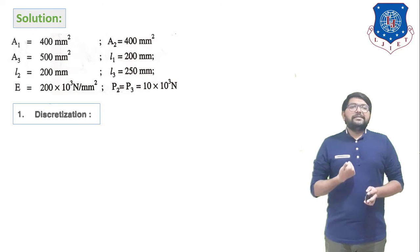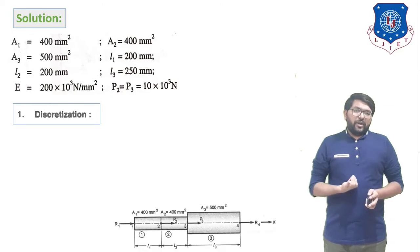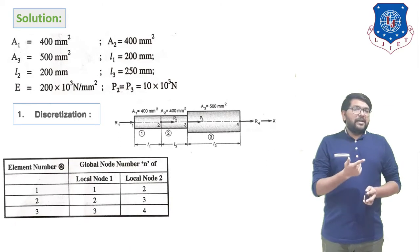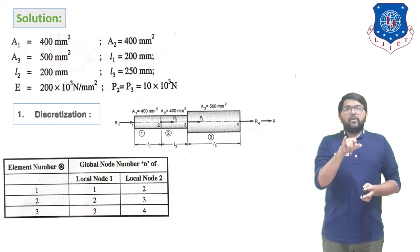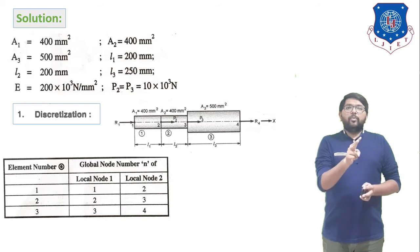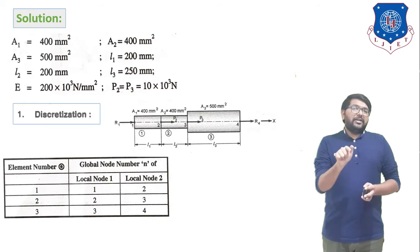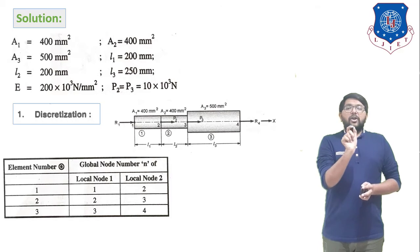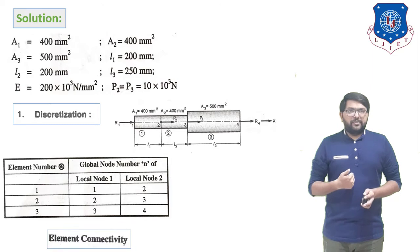Step 1 is discretization — defining element connectivity. Element 1 is mounted between nodes 1 and 2. Element 2 is mounted between nodes 2 and 3. Element 3 is mounted between nodes 3 and 4. This is the discretization process.